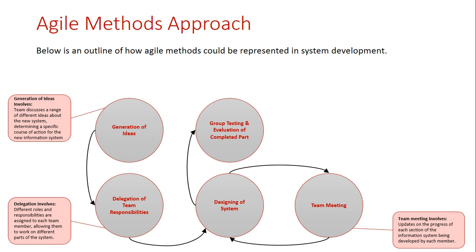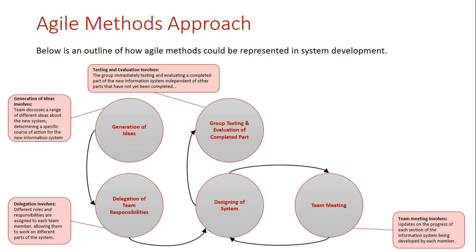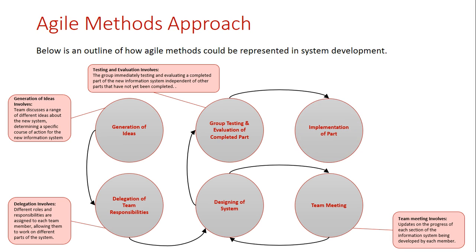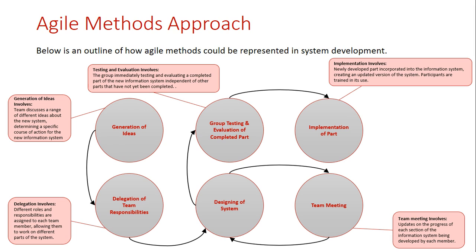After certain parts reach near completion, they need to be tested by the group. They basically evaluate what's going on — does it meet the needs established at the beginning of the project? They need to test it and make sure it's okay. Once it is, that part can then be implemented as a new part of the information system. Each time a part gets evaluated and implemented, it creates a new version of the information system. Participants then need to be updated in order to know how to use the new part of the system.